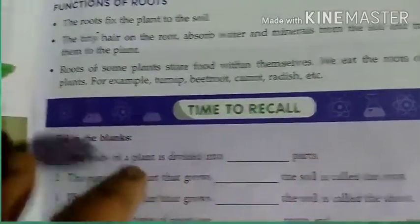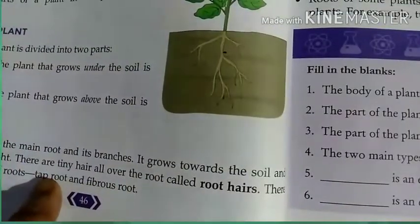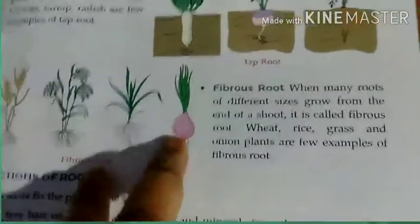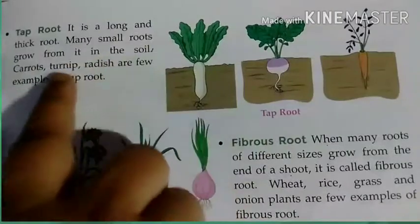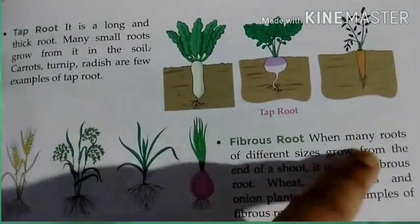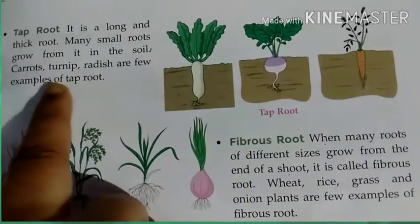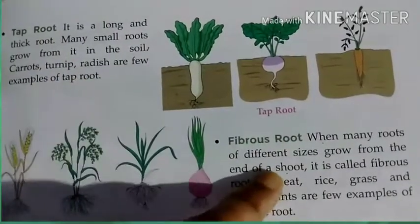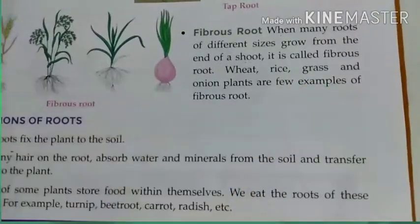So today we learned about roots. Roots are of two types: tap root and fibrous root. The main difference — in tap root it is a long and thick root, while fibrous root is small in size with many roots. Examples of tap root: carrot, turnip, radish. Examples of fibrous root: rice, wheat, grass.